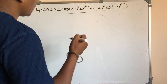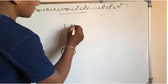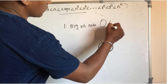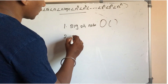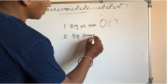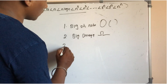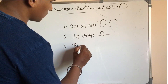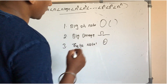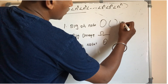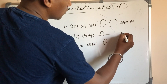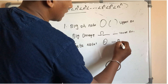First, big O notation. Second, big Omega notation. Third, theta notation. Big O is the upper bound. Omega is the lower bound. Theta is the average bound.